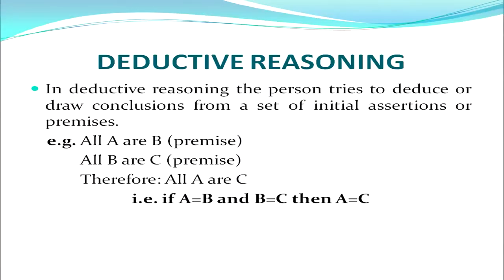Let us know about deductive reasoning first. In deductive reasoning, a person tries to deduce or draw conclusions from a set of initial assertions or premises. For example, if all A are B — that is a premise — and all B are C — another premise — therefore all A are C. That is, if A equals B and B equals C, then A equals C. Things are given to you and you have to deduce the conclusion from what is given.